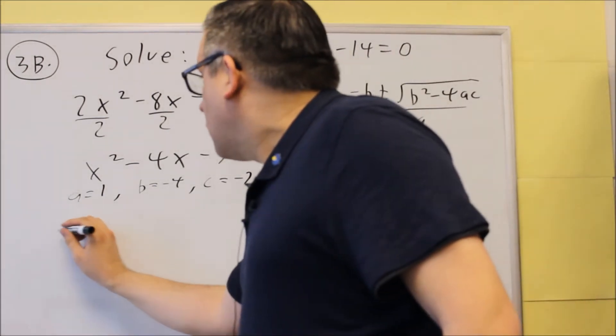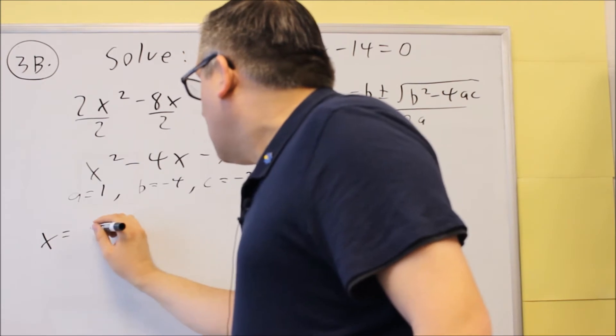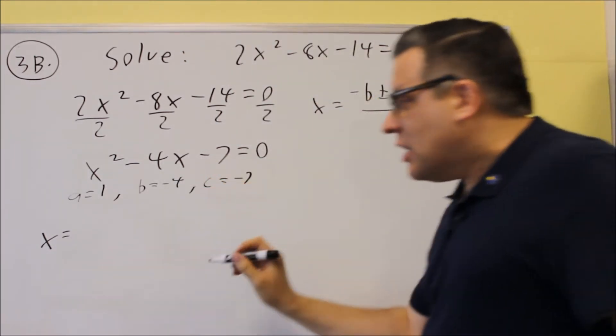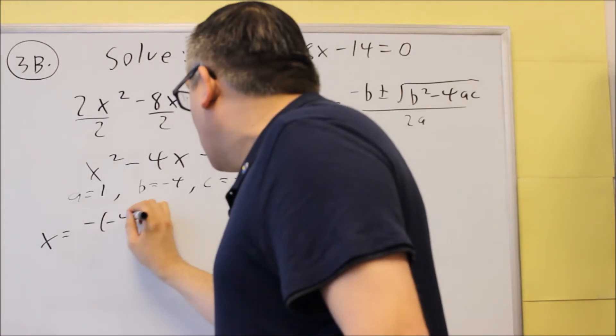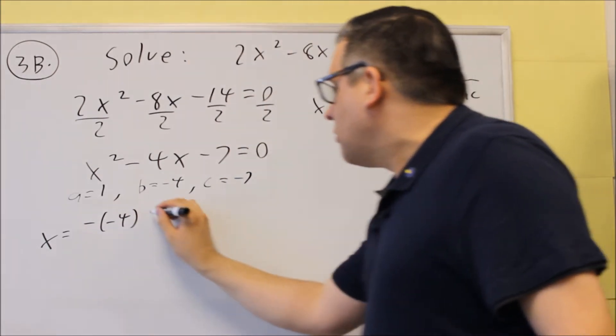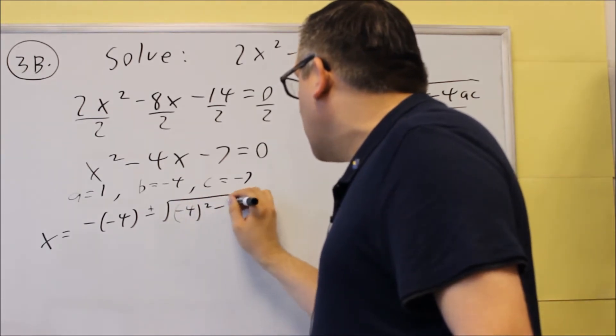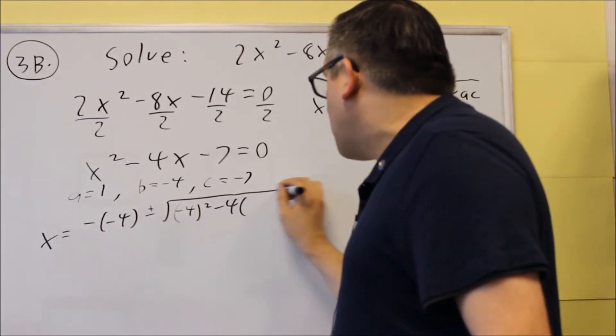So let's start with that. We have x is equal to, okay, the formula has a negative in front of it, but we also have a negative there for our b, so be careful. It's negative negative 4 plus or minus square root of negative 4 squared minus the 4 as part of the formula.